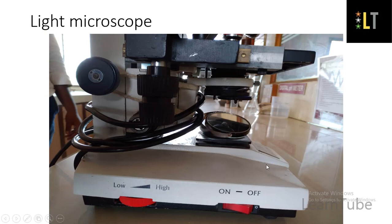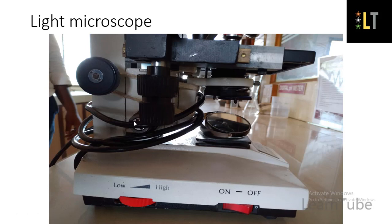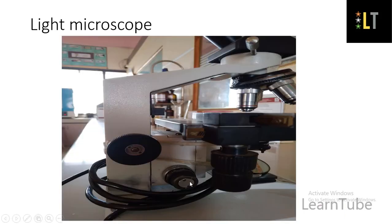This is the stage of the microscope. Here are the two knobs used for adjustment of the stage, called the stage adjustment knobs. By moving them, you can move the stage either right to left or forward or backward. The coarse adjustment knob adjusts the height of the stage from the objective lens, and the fine adjustment knob is used for adjustment of a blurred image.